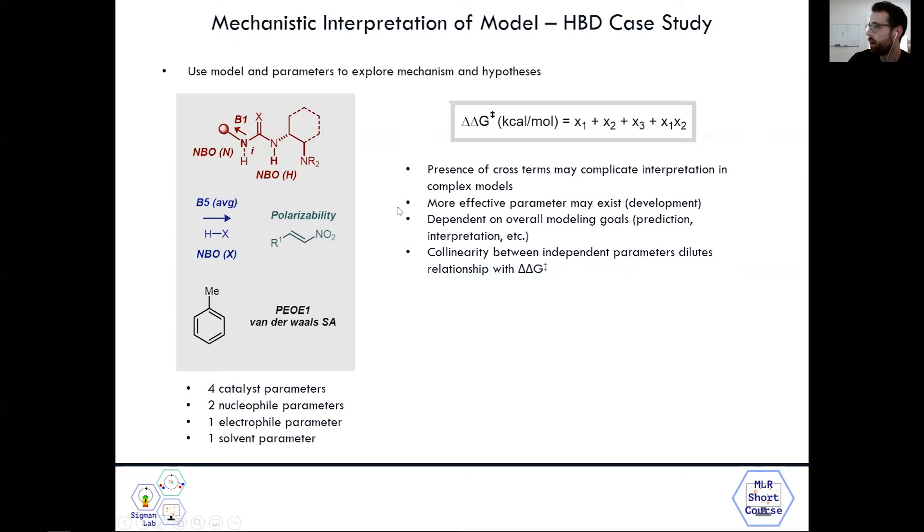The whole interpretation and prediction is really dependent on your overall modeling goals. When you're picking models and thinking about cross-terms and the parameters you're having, it comes down to what your modeling goals are, whether you want a really predictive model that you're not very interested in interpretation, or if you're purely interested in mechanistic interpretation. This guides you in how to pick your models and compare one model over another. As our group is quite interested in mechanistic interpretation, this is typically one of the factors we consider when choosing a model. Furthermore, in the same sense as cross-terms, the colinearity between independent parameters causes issues in interpretation because the independent relationship with ΔΔG is quite diluted since you have such an overlapping space that you're covering with two different parameters. Trying to understand the role of those individual parameters becomes quite difficult.